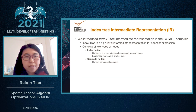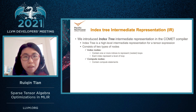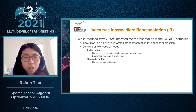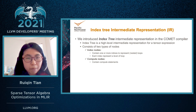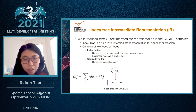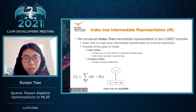In order to support the workspace, we introduced the Index Tree IR. The Index Tree IR in the compiler is a high-level intermediate representation for tensor expressions. It consists of two types of nodes: index nodes and compute nodes. The index node contains one or more indices to represent loops or nested loops, where each index represents a level of loop. The compute node contains a compute statement. As a simple example, suppose we have a sparse matrix multiplication expression, SpGEMM. The index tree for this tensor expression consists of index nodes and leaf nodes, where leaf nodes represent compute nodes.